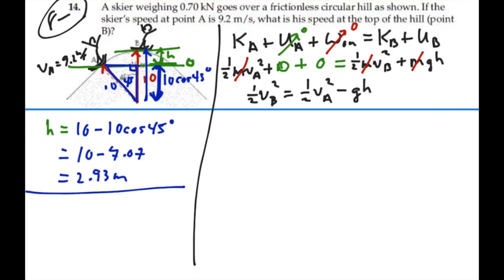Let's multiply both sides by 2 and take the square root. So we have the velocity of B is going to equal the velocity of A squared minus 2 times g times H square root.